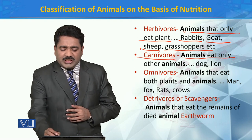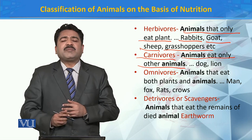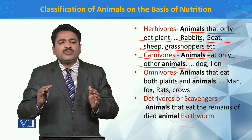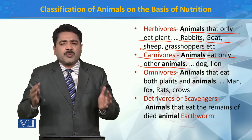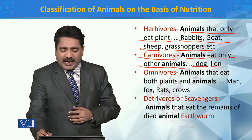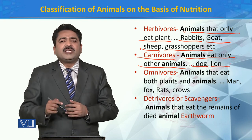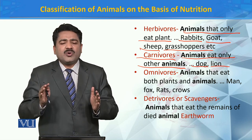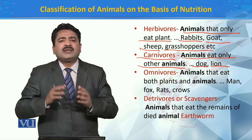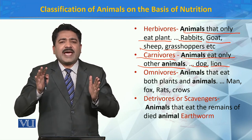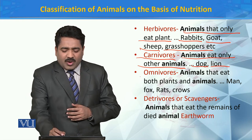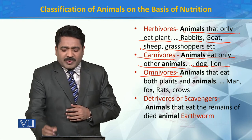Now what are Carnivores? Carnivores are animals that eat only other animals; they feed on other animals. For example, dogs or lions — they kill other animals and feed on them. These are Carnivores.